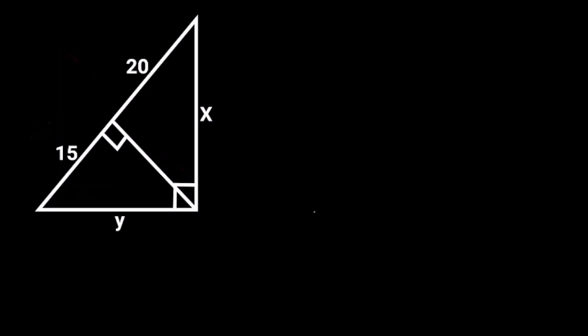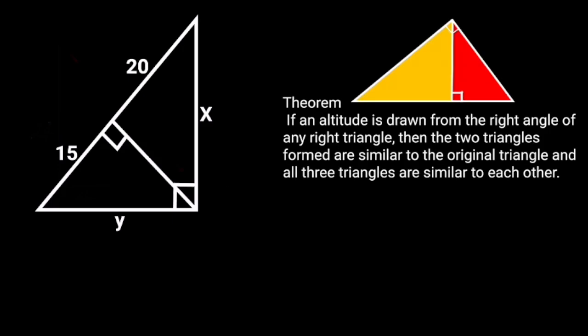To solve this problem, first let's recall the inscribed similar right triangles theorem. It states that if an altitude is drawn from the right angle of any right triangle, then the two triangles formed are similar to the original triangle, and all three triangles are similar to each other.